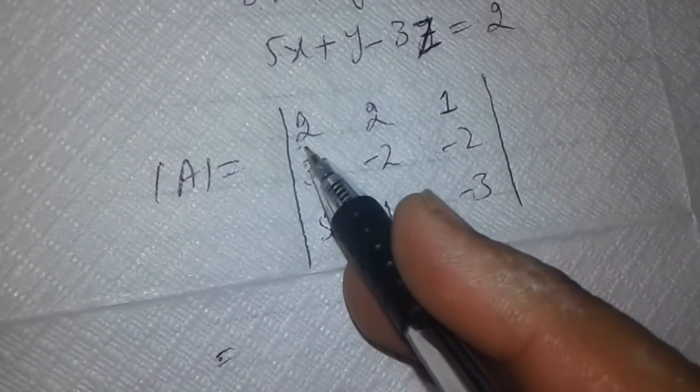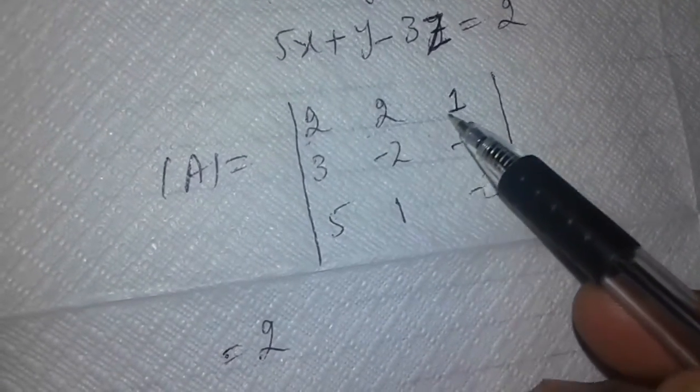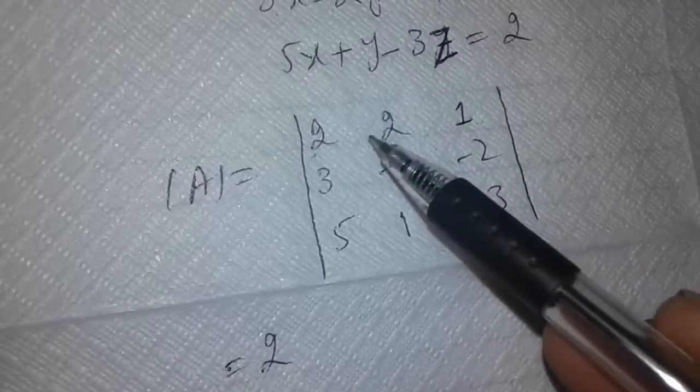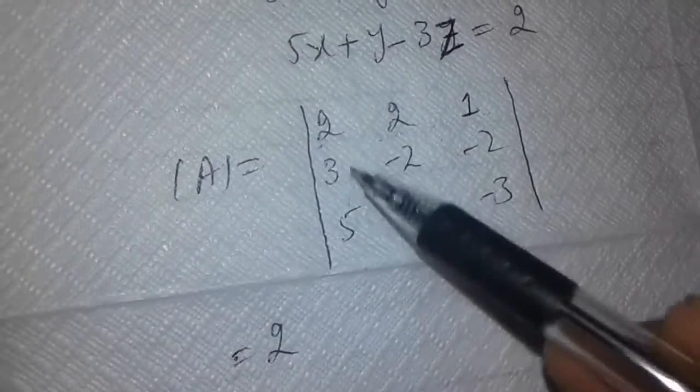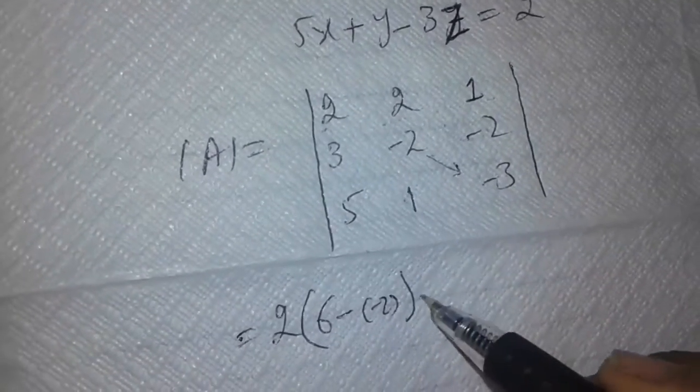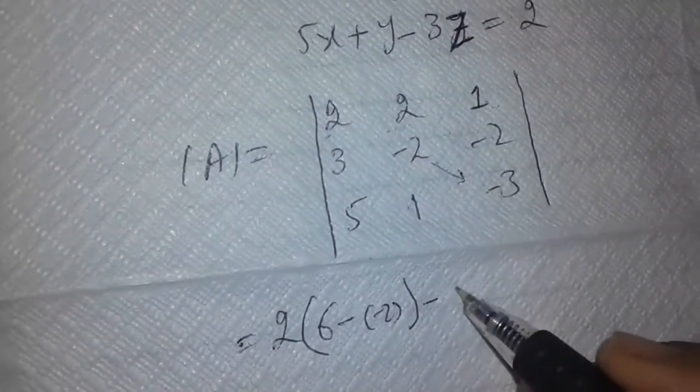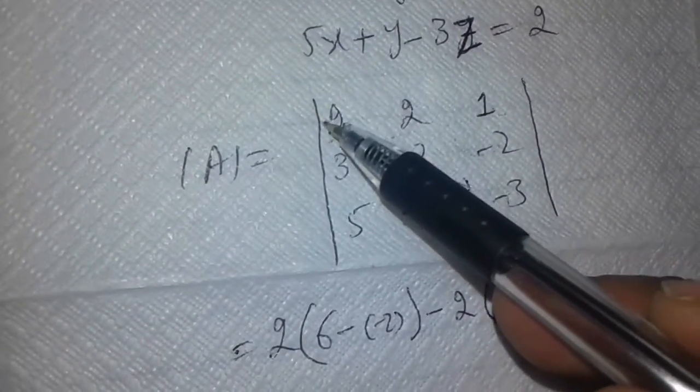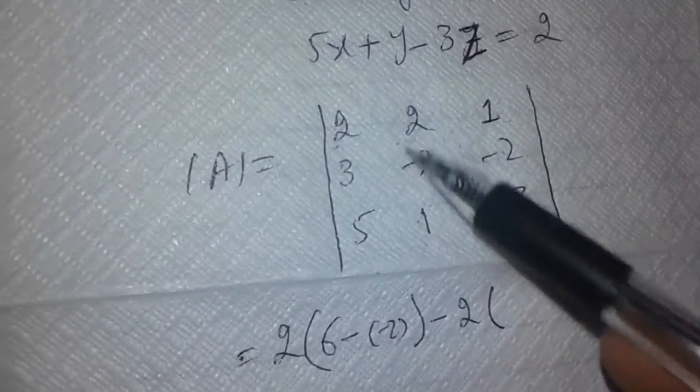The first coefficient is 2. We leave the first row and first column, and the remaining four entries give us: multiply minus 2 by minus 3, which is plus 6, minus 1 by minus 2, which is minus 2. For the second entry of 2, we leave the first row and second column.